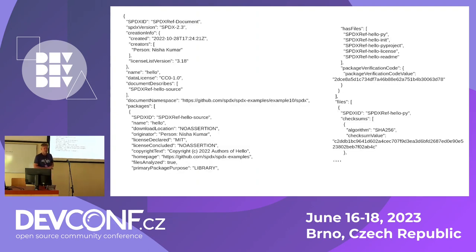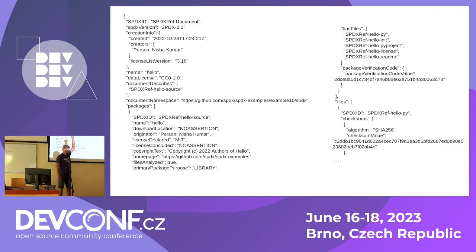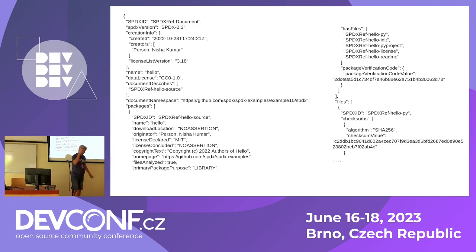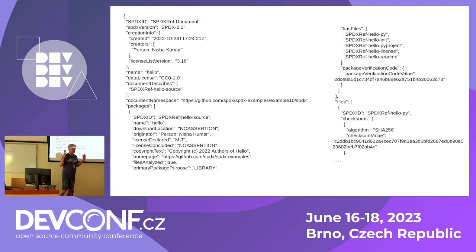How does the Software Bill of Materials actually look? This is an example of an actual SPDX document. There's some header preamble, something which describes the component — a package named Hello — and some information. If you come from the Red Hat Fedora world, it may resemble the RPM preamble section. Then we have the list of files, something you can easily get with RPM -ql, and then some identification. If you are using RPM or any other package manager, it is very easy to retrieve — with a few RPM query commands, within 15 minutes you can have the Software Bill of Materials.